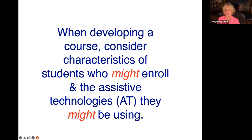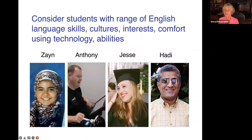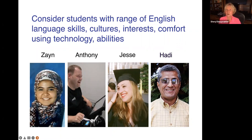Whenever you're developing a course, you should consider the characteristics of students who might enroll and the assistive technology they might be using. I like to think of four people I know when I'm teaching a class online, and if I make my class accessible to them, it's going to be pretty accessible to lots of other people as well. You should also think about English language skills, cultures, interests, and comfort using technology — some people are more comfortable than others — and try to keep the need for knowing how to use technology at a minimum, because you want to teach the content in your class.